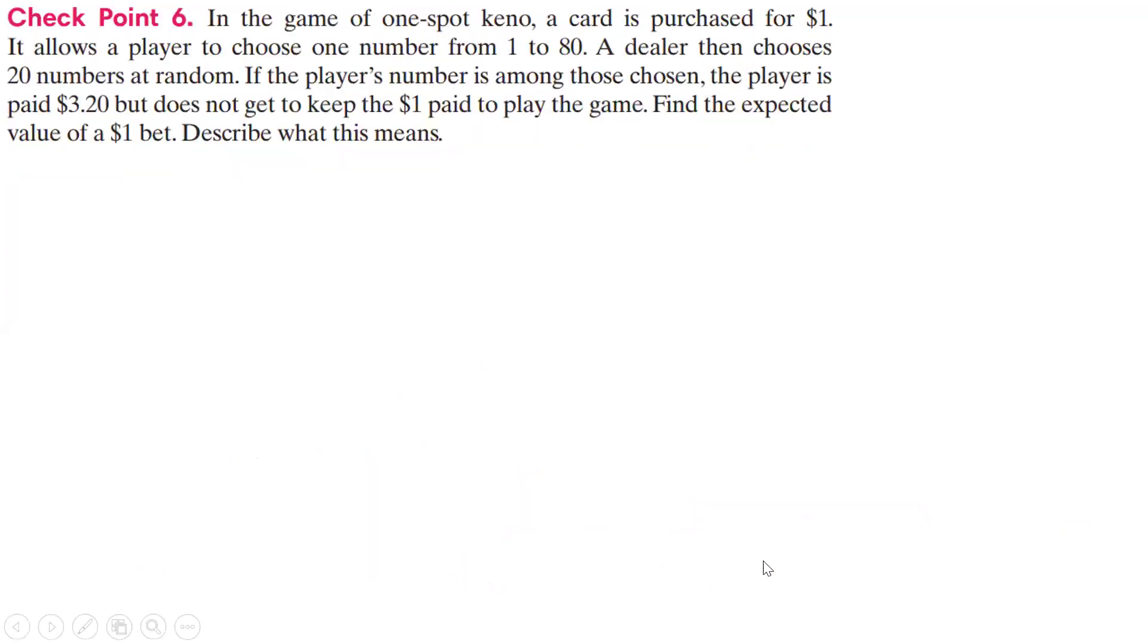Now, what if we do a different one, playing Keno. So in the game of one spot Keno, a card is purchased for a dollar. It allows a player to choose one number from 1 to 80, and a dealer then chooses 20 numbers at random. Now, if the player's number is among those chosen, the player is paid $3.20, but doesn't get to keep the dollar paid to play. Now we're supposed to find the expected value of a dollar bet.